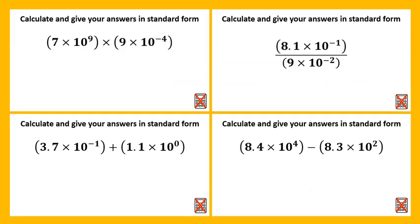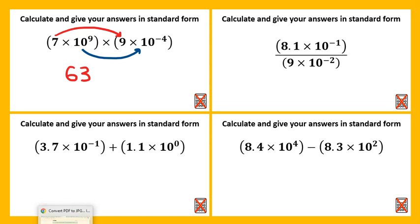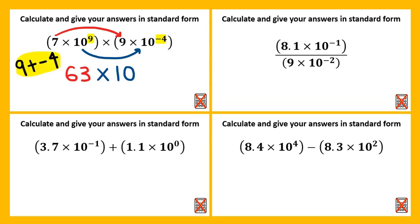Onto the intermediate questions with a slight increase in difficulty. Seven multiplied by nine is sixty-three. And ten to the power of nine times by ten to the power of negative four would be the same as adding negative four to nine. This would be the same as nine take away four, which would leave us with ten to the power of five.